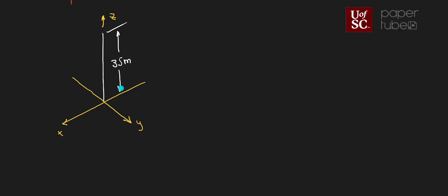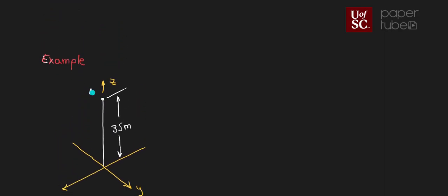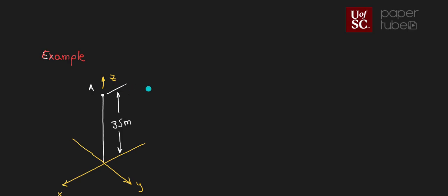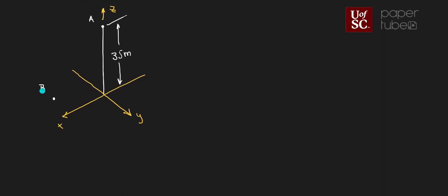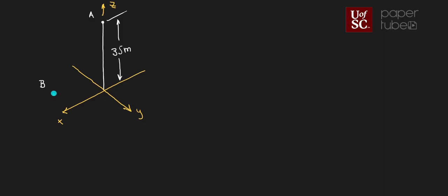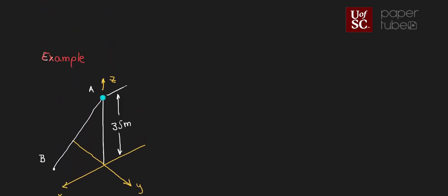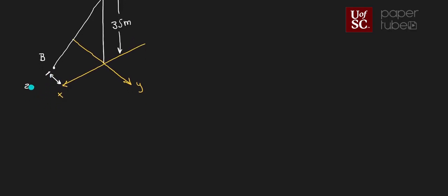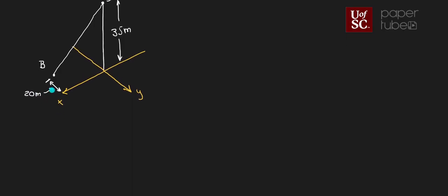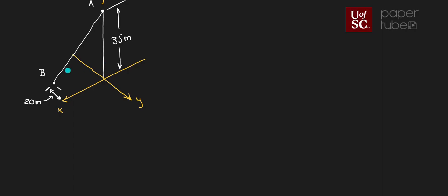There is a point A at the top of the tower, and there is another point B, which is the location where a cable connected to the top of the tower is anchored. This cable is line AB. The distance from B to the x-axis is 20 meters, and the distance from B to the y-axis is 30 meters.